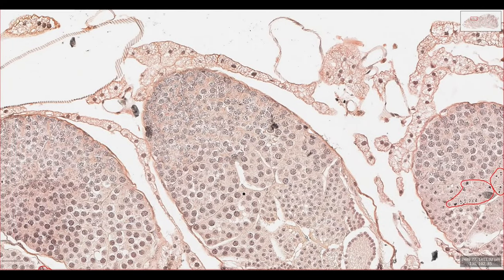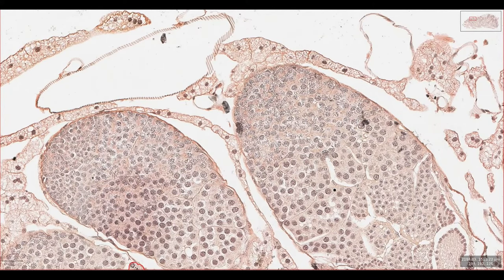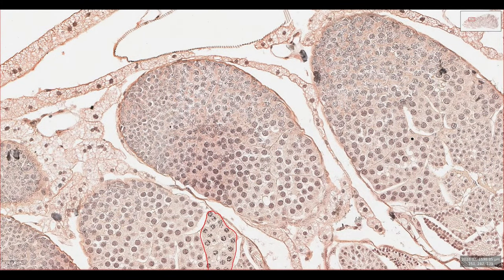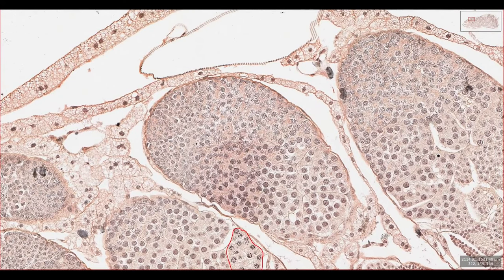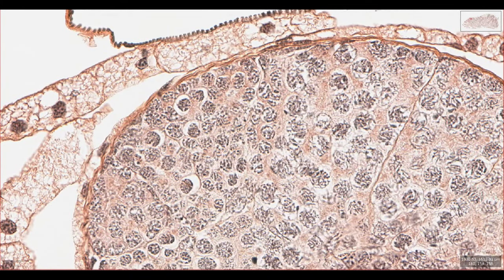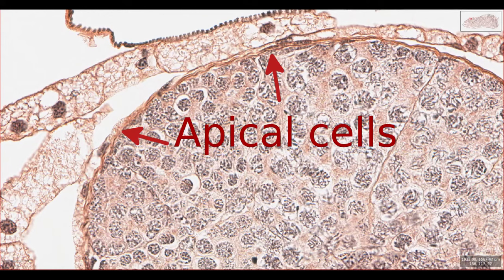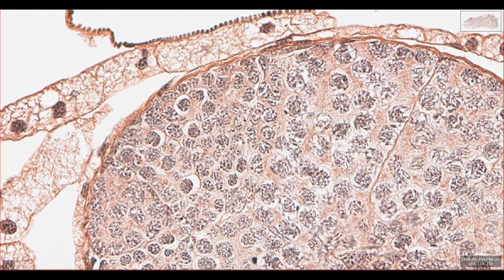The germarium contains germ cells. This is a generic name for cells in any animal that give rise to the gametes — in this case spermatocytes rather than oocytes or eggs. As well as germ cells, the tip of the testis follicle is lined by large apical cells, these ones here. These apical cells provide nutrients to the germ cells via cytoplasmic extensions. The germarium is probably the first layer of cells lining the tip of the testis follicle.